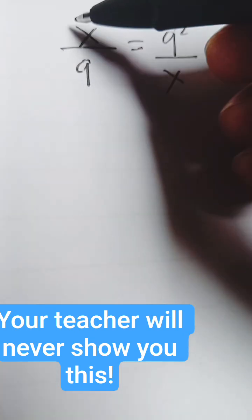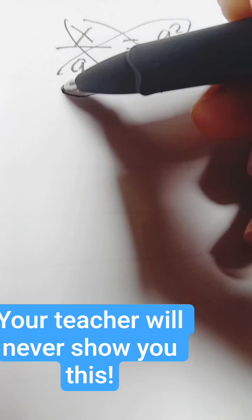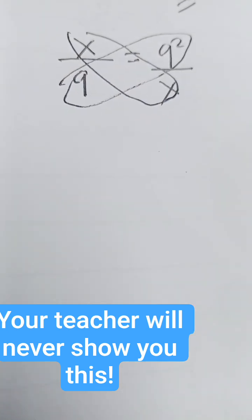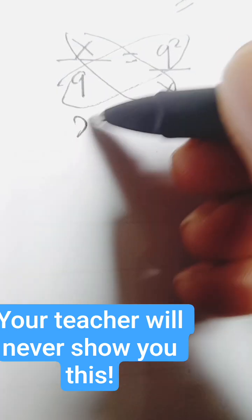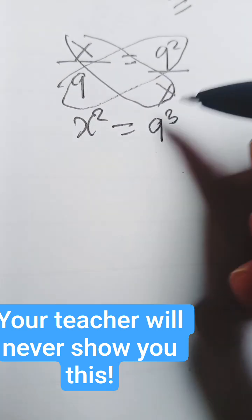The quickest way to solve this problem is by cross multiplying. So x times x is x squared equals q squared times 9 to the power of 3.